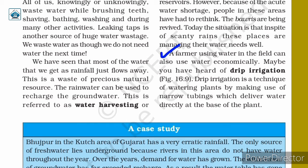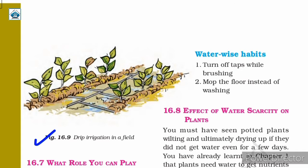A farmer using water in the field can also use water economically. You may have heard of drip irrigation. Drip irrigation is a technique of watering plants by making use of narrow tubing, which delivers water directly at the base of the plant. In figure 16.9, you can see drip irrigation in a field. Water is allowed to drip slowly into the plants so that it directly reaches the roots. This minimizes evaporation, saves water, and allows nutrients to reach the plant easily.